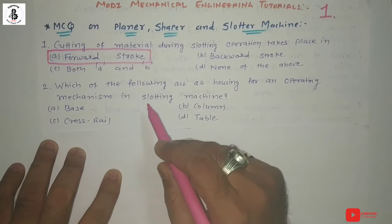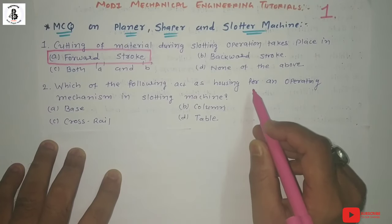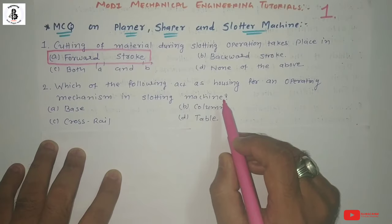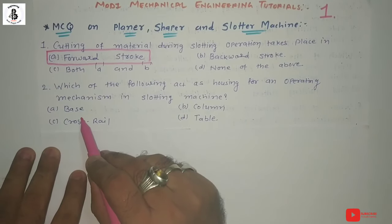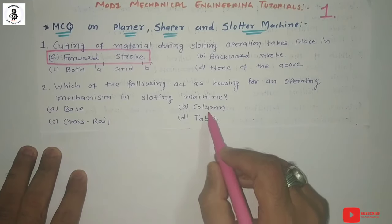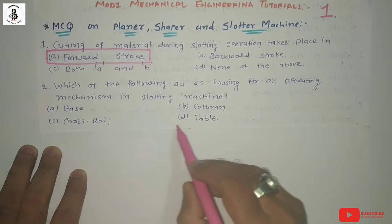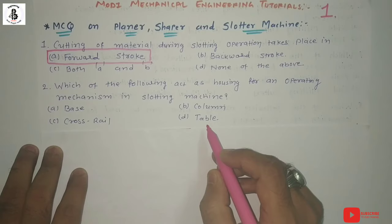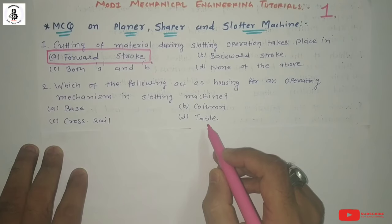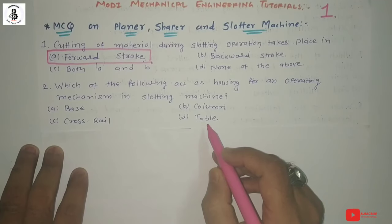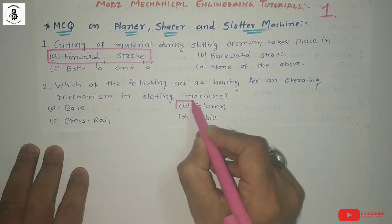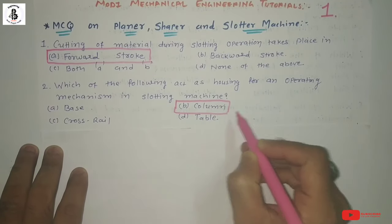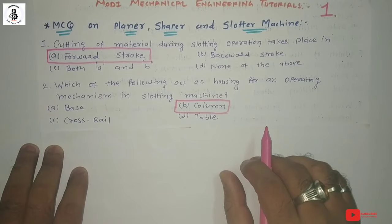Next question: Which of the following acts as housing for an operating mechanism in a slotting machine? Option A: base, option B: column, option C: crossrail, option D: table. Basically, this question is related to the construction and working of slotting machines. Most of the housing for operating mechanisms is in the column of the slotting machine — so the answer is option B.